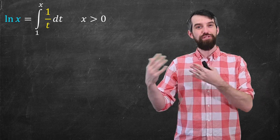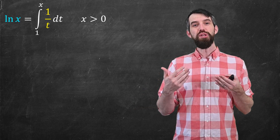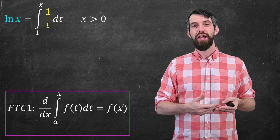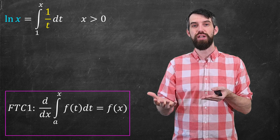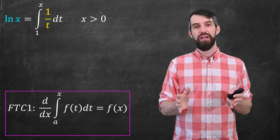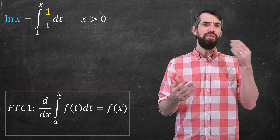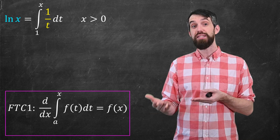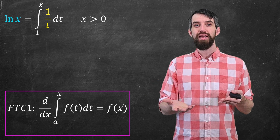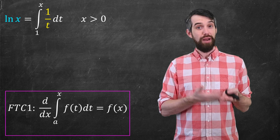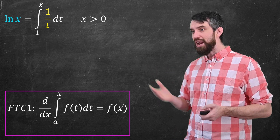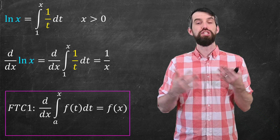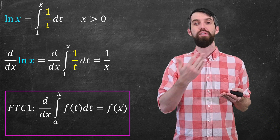One of the nicest features of defining the logarithm this way is that we can use the fundamental theorem of calculus. The fundamental theorem of calculus says that the derivative with respect to x of an accumulation function — an integral from a up to x of f of t dt — is just the function f evaluated at x. So now I can take the derivative of logarithm. By the fundamental theorem of calculus, the derivative of the integral of 1 over t is just 1 over x. So the derivative of logarithm is 1 over x.